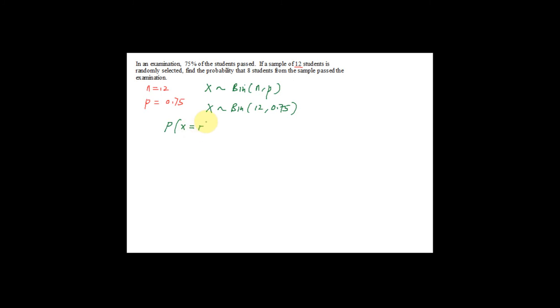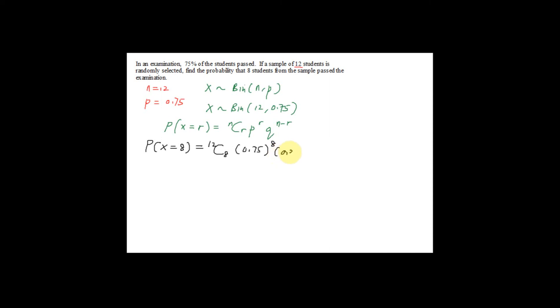For binomial distribution, P(X = r) = nCr × p^r × q^(n−r). This formula is given in the SPM formula book. The question asks us to find P(X = 8). This equals 12C8 × (0.75)^8 × (0.25)^(12−8), giving (0.25)^4. Remember, q = 1 − p = 1 − 0.75 = 0.25. Press your calculator and the answer should be 0.193578.